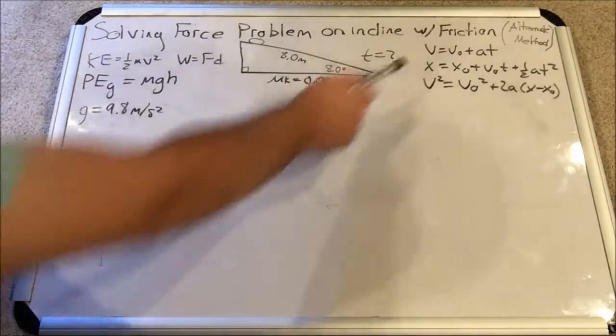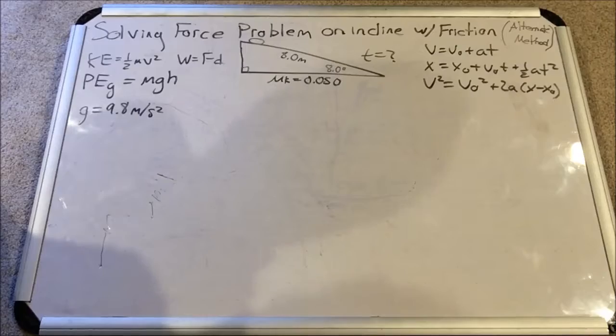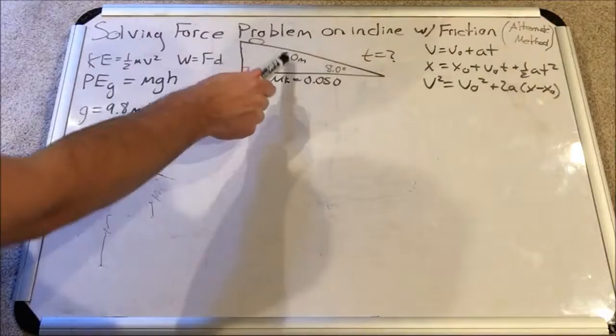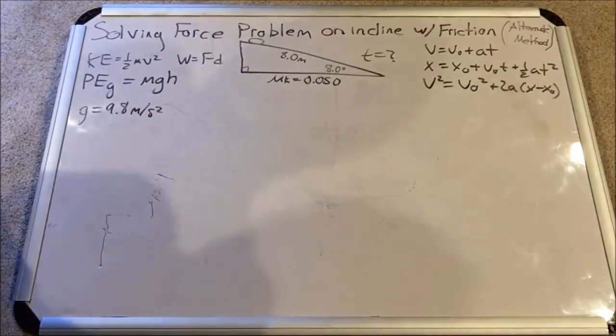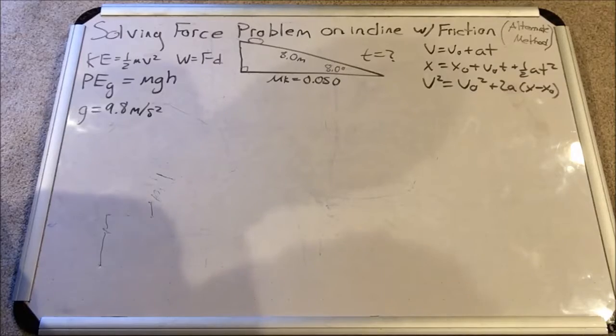We are still going to have to use Newtonian kinematics here at the end, and we're going to find the same thing. We're going to find the time it takes this soap bar to travel down the entirety of this 8 meter ramp. The ramp is inclined at 8 degrees and the coefficient of kinetic friction is still 0.05, just like before.